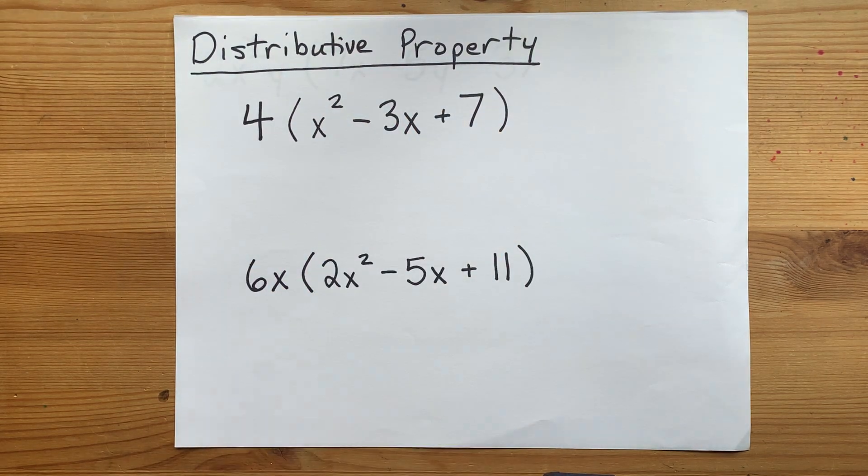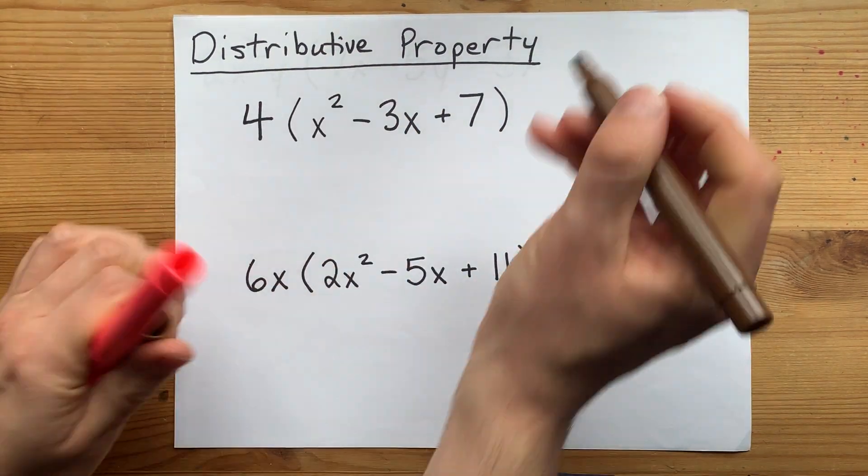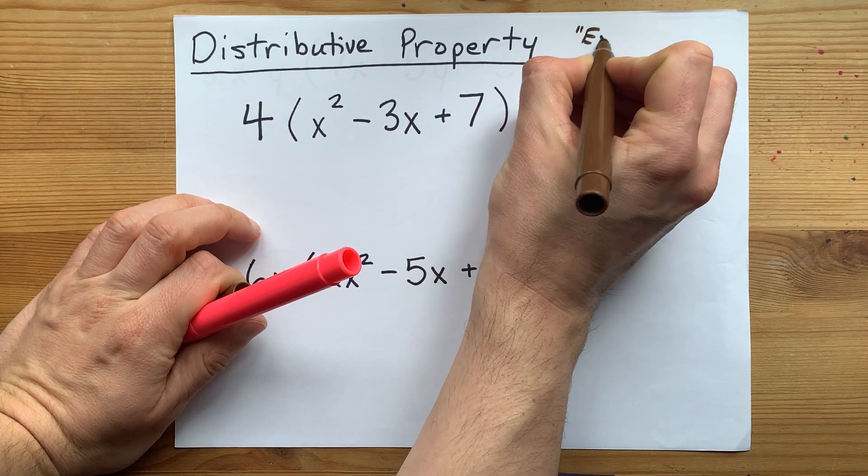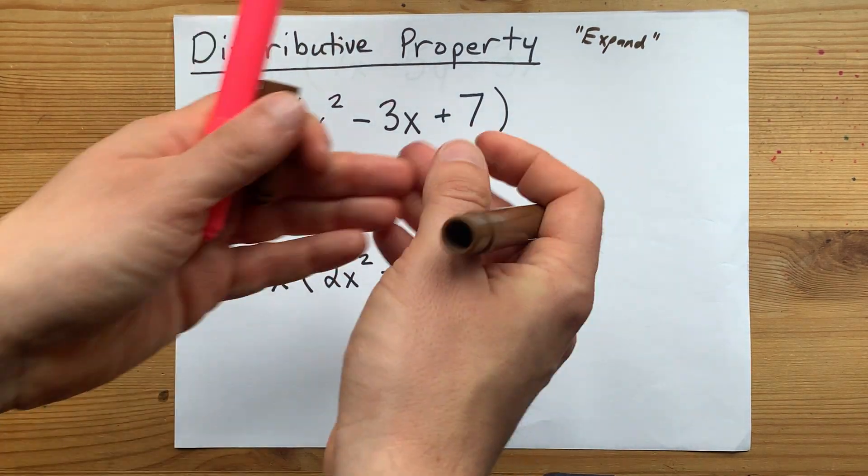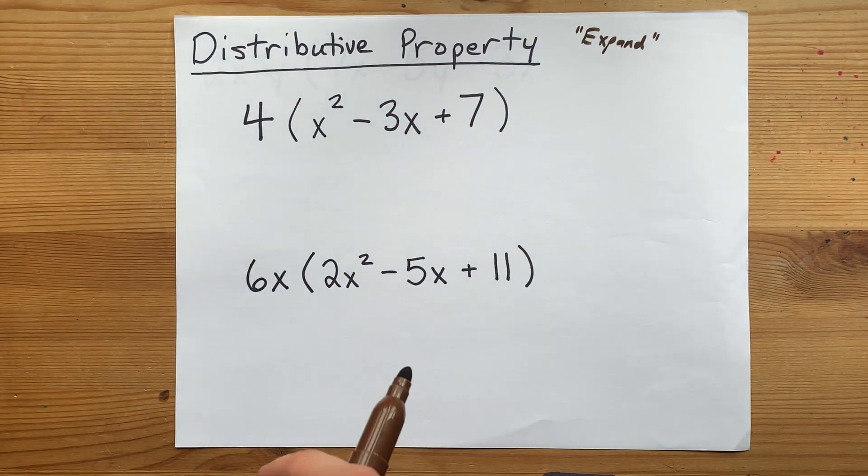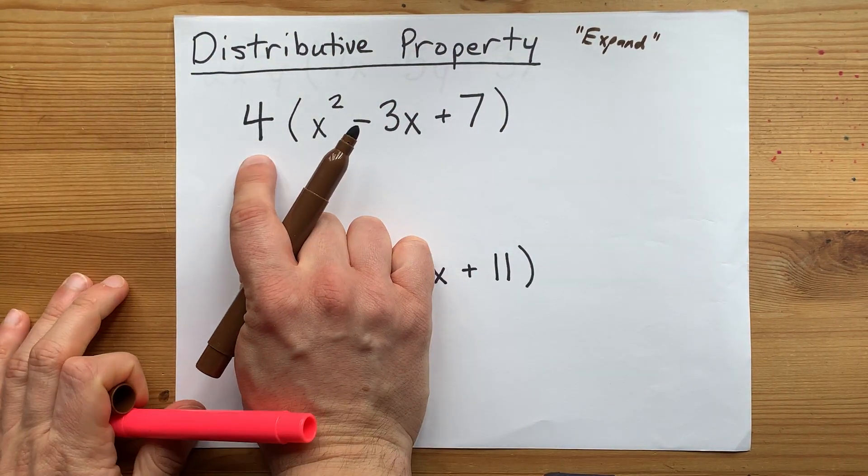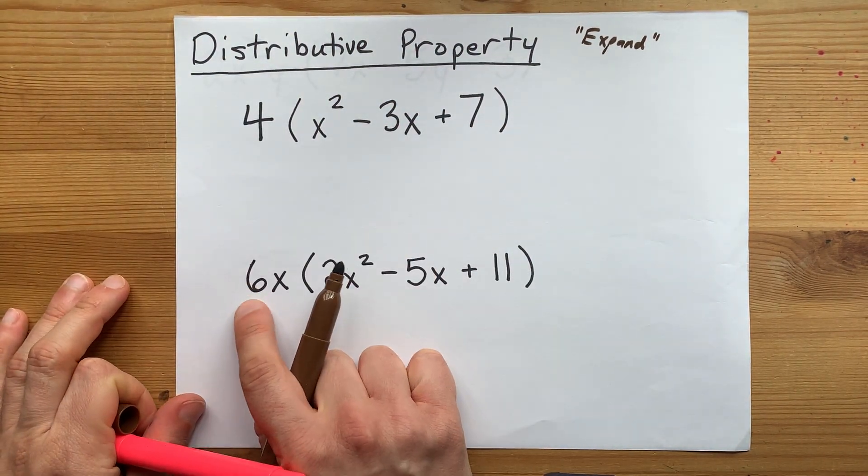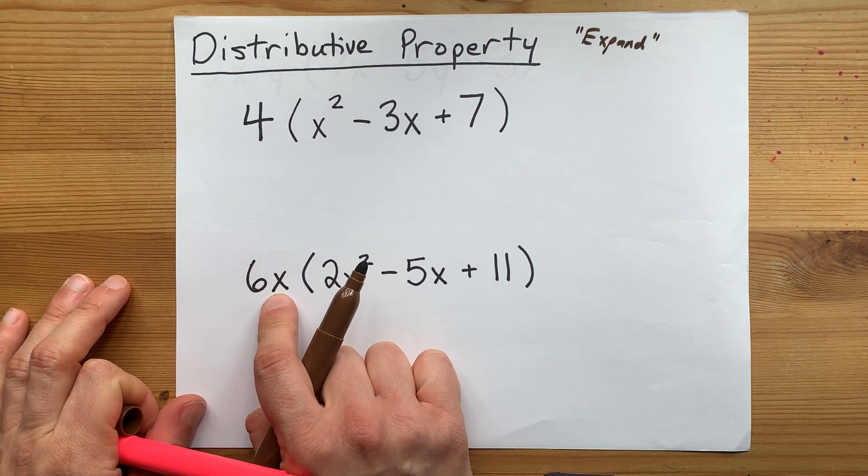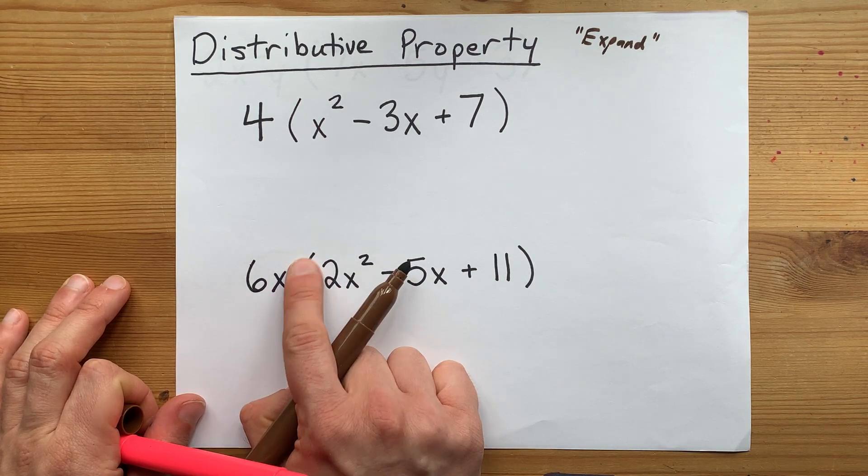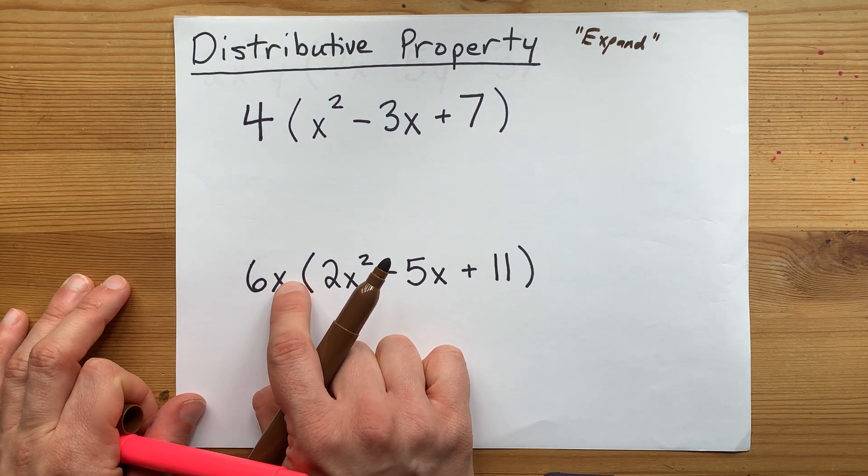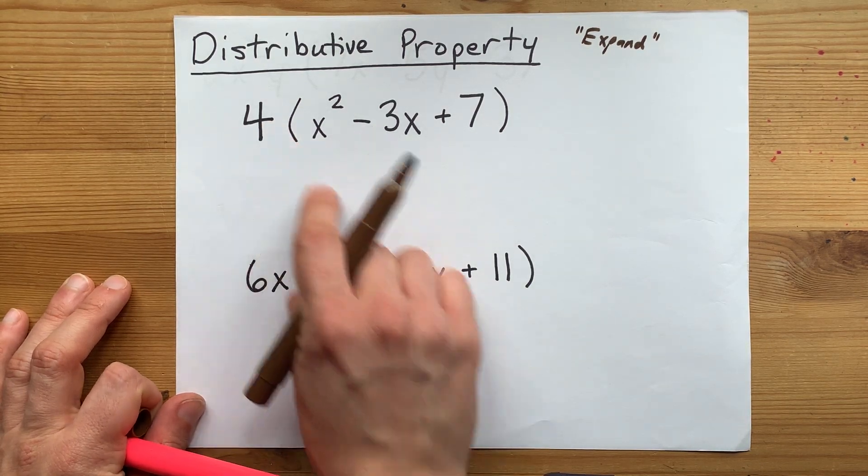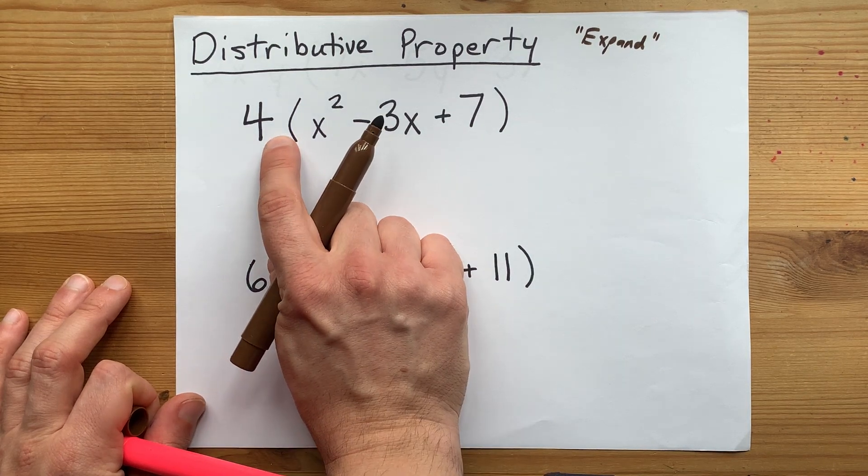I just want a quick video here to show you the distributive property, which is the expand part of the questions your math teacher asks with expand and simplify. When you have a number or a coefficient with a variable sitting out front of a set of brackets, and there is no plus or minus sign in between it and the bracket, it means there's a multiplication.